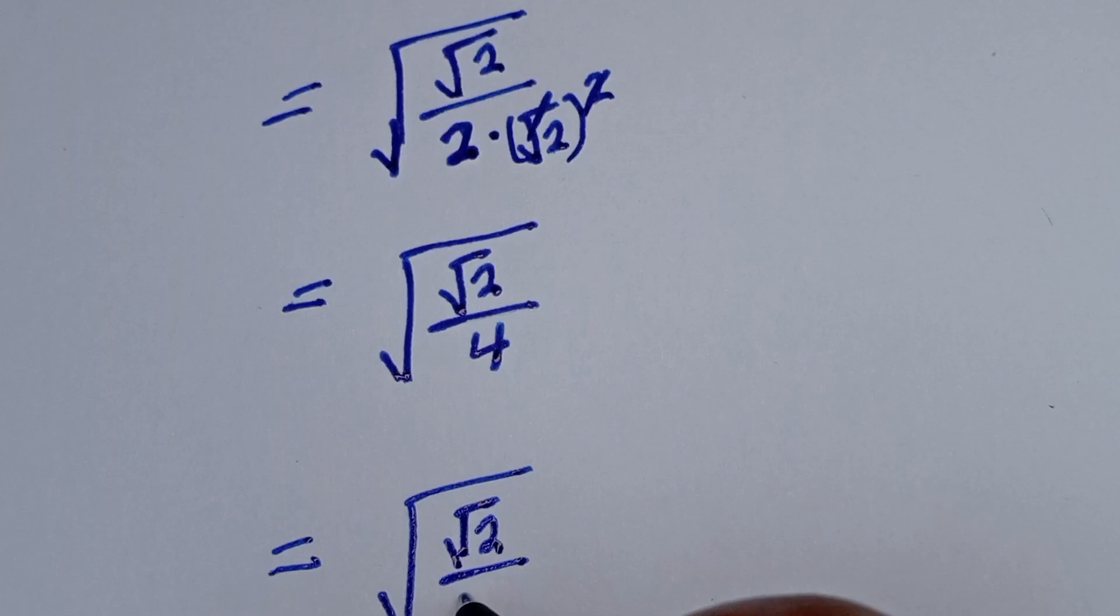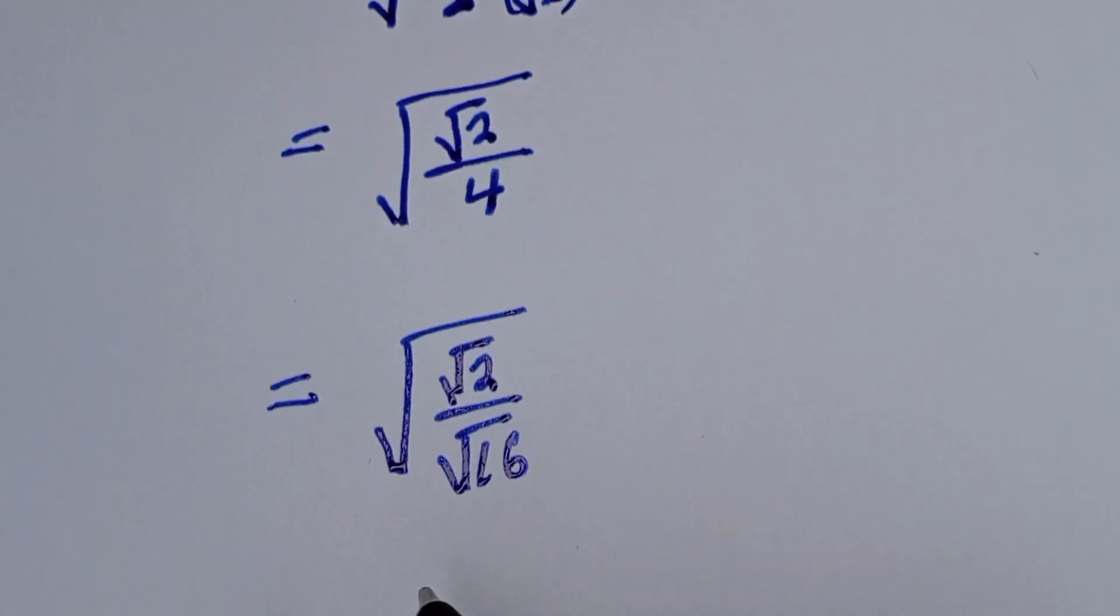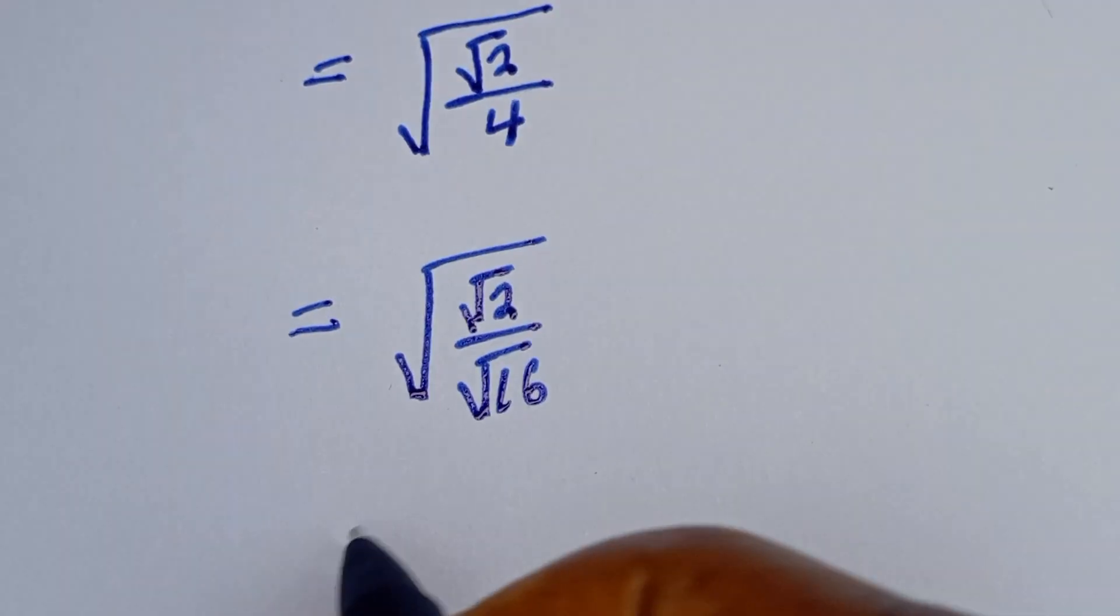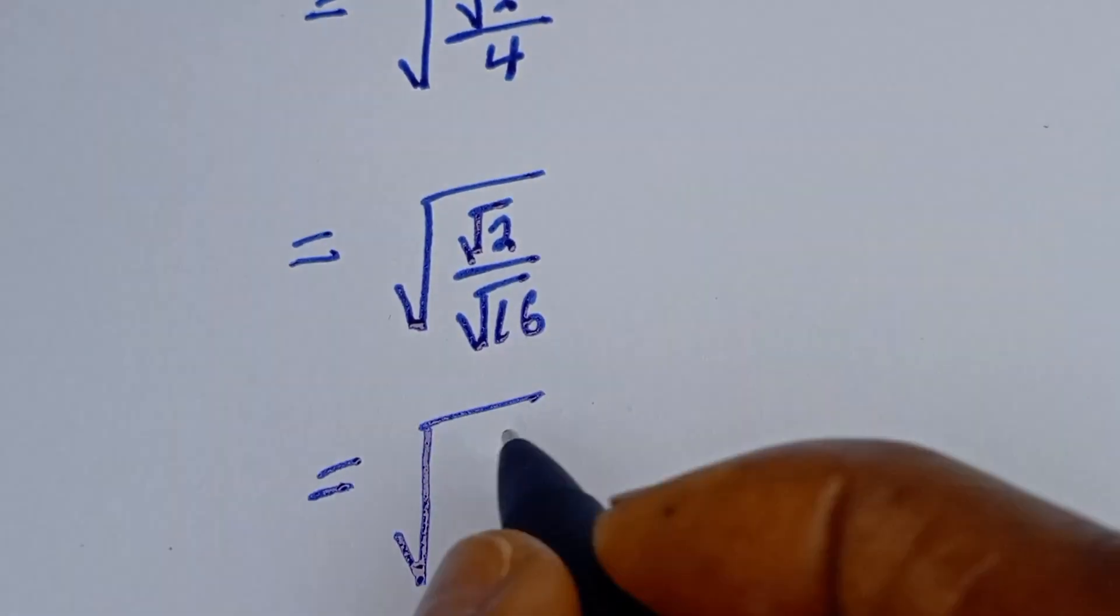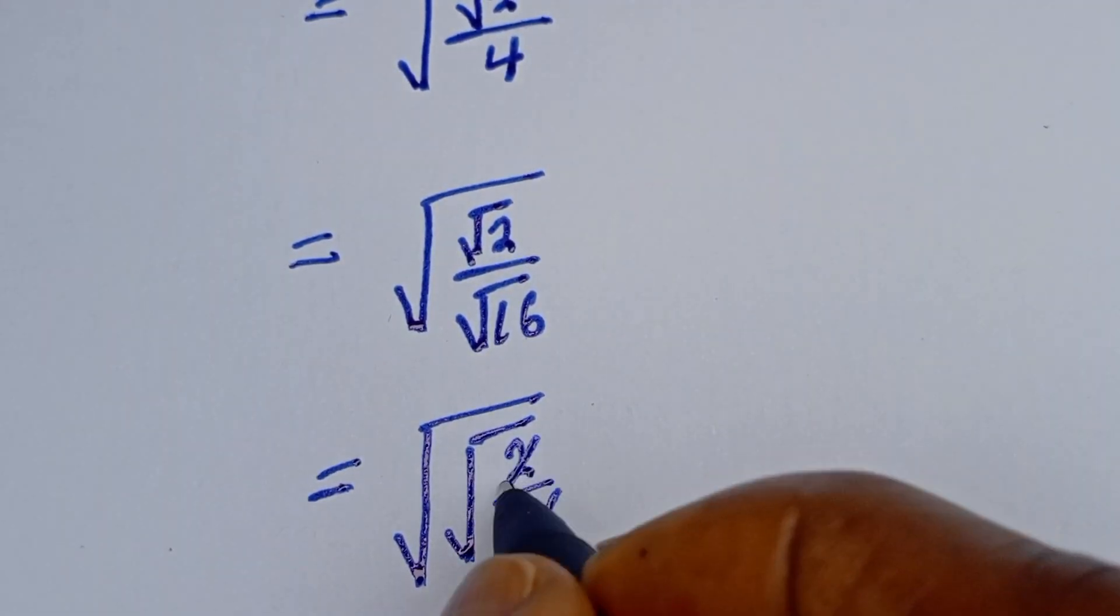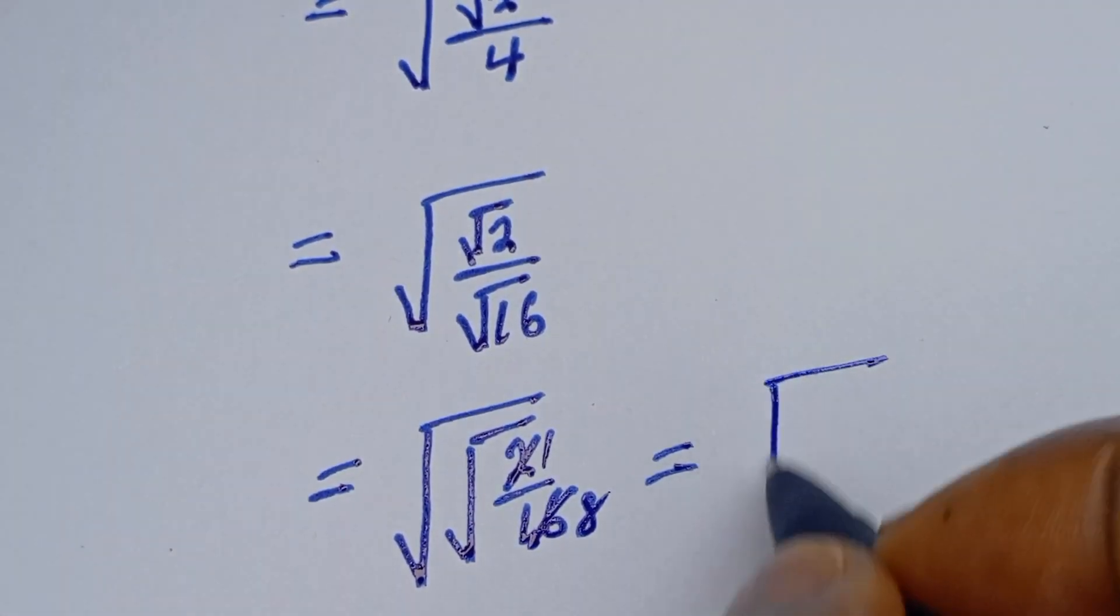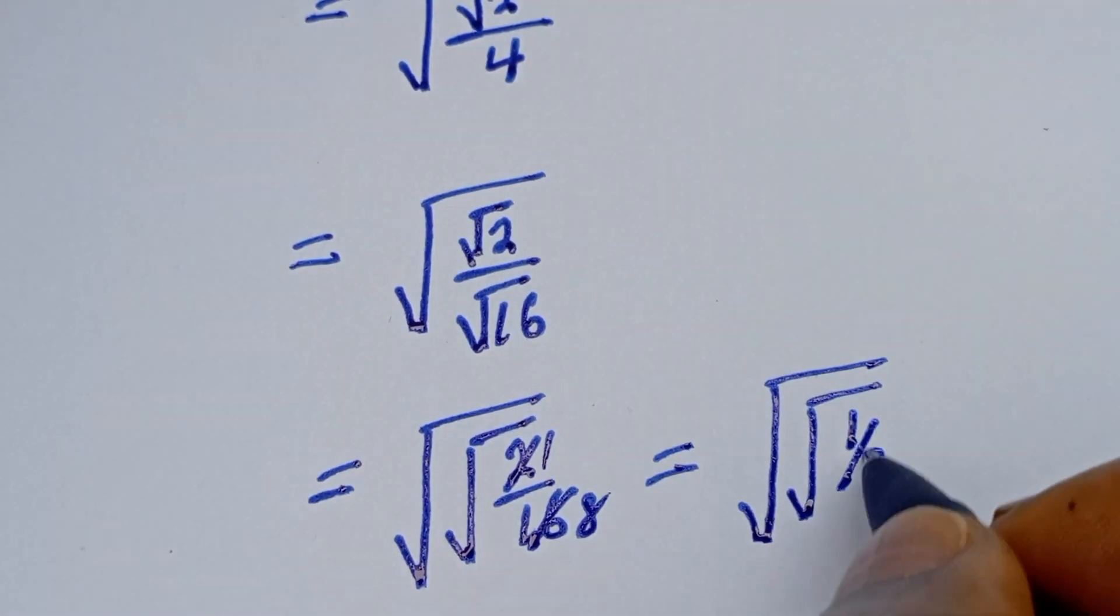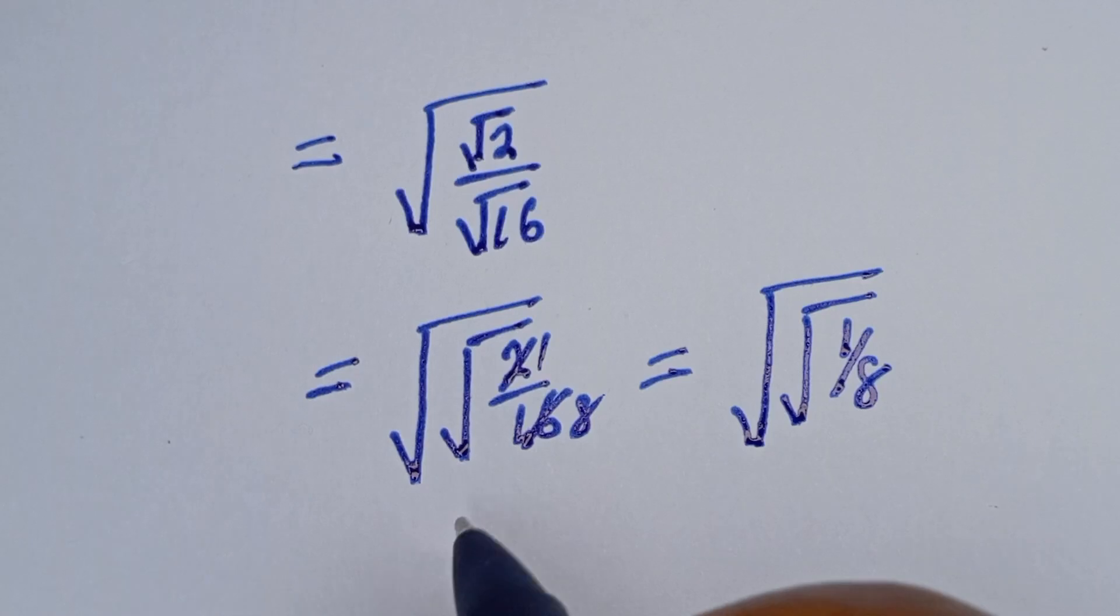root 2 over 4. This is equal to the square root of root 2 over 16, and this is equal to the square root of root 1 over 8. And this, if you by simplification, can be written as